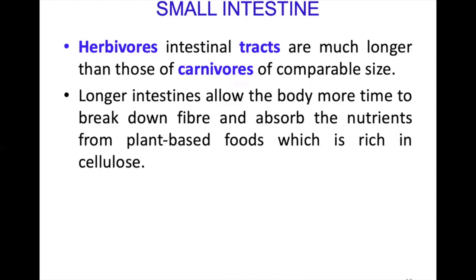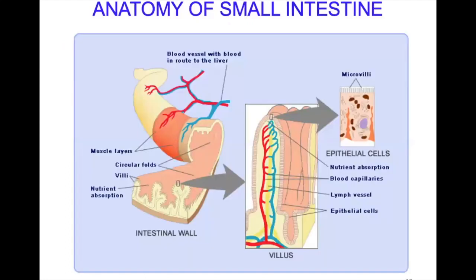Herbivores' intestinal tracts are much longer than those of carnivores of comparable size, because they eat food rich in cellulose — a straight-chain carbohydrate that takes longer to digest. Humans and herbivores both lack enzymes that digest cellulose; in herbivores, bacteria in the gut produce enzymes to digest cellulose. A longer intestine means food stays inside for a longer duration.